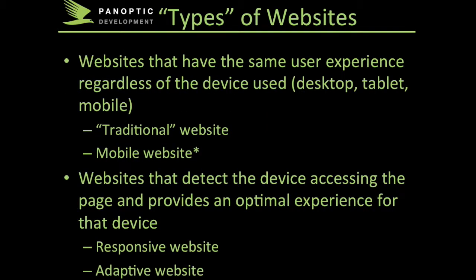I like to put different types of websites into two different buckets. One bucket being websites that really don't care what type of device you're accessing it from — it'll be the same user experience whether you access the site from a mobile phone, a desktop, or a tablet. Two examples of these are your traditional website and a mobile website. The other type of websites are ones that actually determine the type of device you're accessing it from and optimizes the user experience for that particular device. Two examples of this are responsive websites and adaptive websites.